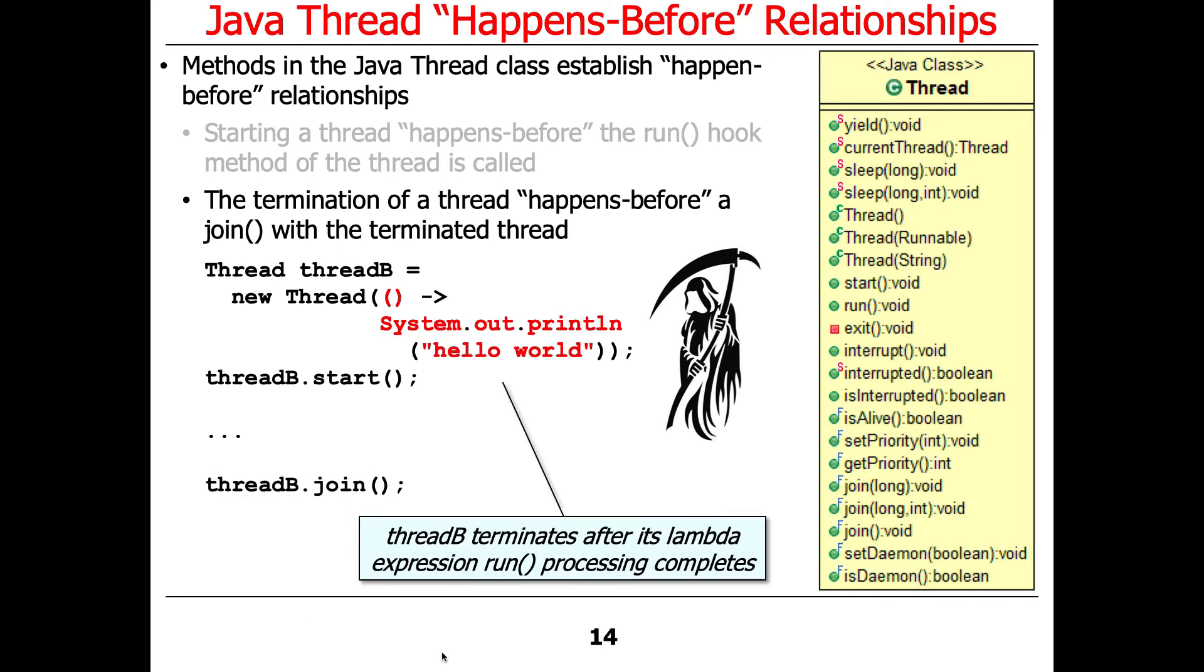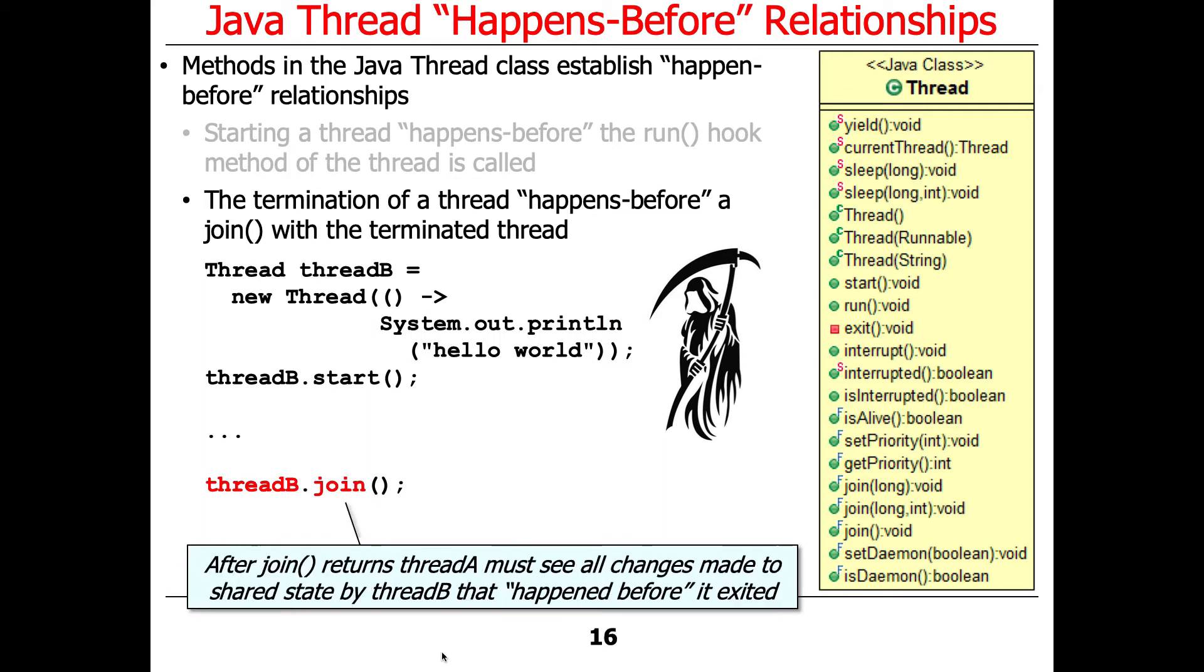Any state that was changed here in thread B will be visible in thread A. So what it says here, after join returns, thread A must see all the changes made to the shared state by thread B that happened before it exited.